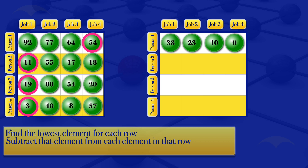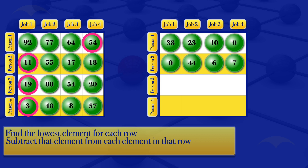Moving to row number two, we subtract 11 from every element in that row. So 11 minus 11 gives 0, 55 minus 11 gives 44, 17 minus 11 gives 6, and 18 minus 11 gives 7.